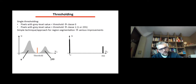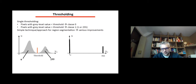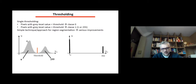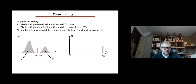Now we focus on thresholding. As we've seen, it's a way of manipulating the histogram: you look for a threshold value where all values below are set to zero and all values above are set to 255. This is a simple technique for image segmentation and can be very powerful, especially when you have well-contrasted images where the histogram clearly shows one peak for the background and another peak for the object — putting a threshold in the middle is a simple yet powerful approach when these two peaks are well separated.